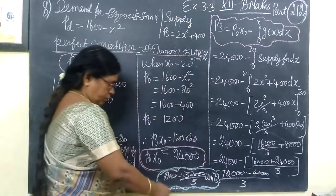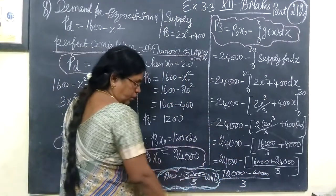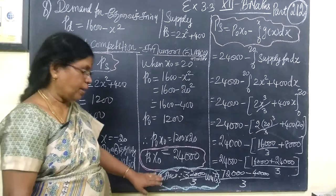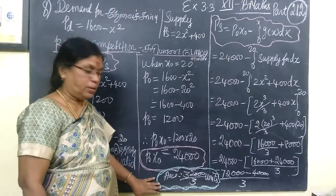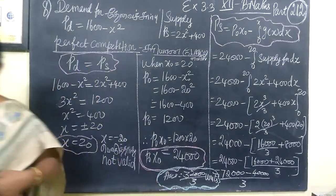So the final answer for this is 32,000 by 3 units. This is the answer for this question, as we have solved it.